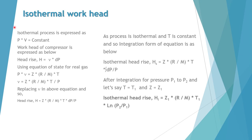Now we have to derive the isothermal work head rise. Isothermal process is expressed as p into v is constant. The work head of the compressor is expressed as head rise h equals integral of specific volume into dp. Using the equation of state, we can write p into specific volume equals z into r by m into t, so specific volume equals z into r by m into t by p. Replacing v in the above equation, we can write h equals z into r by m into t times dp by p.